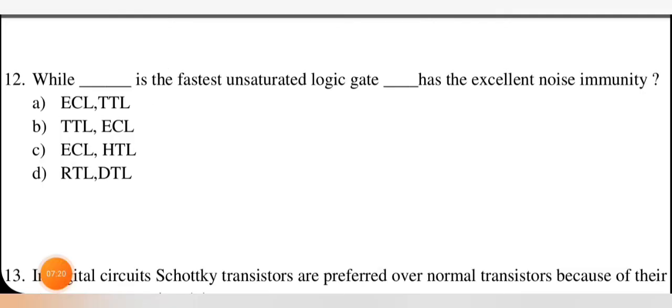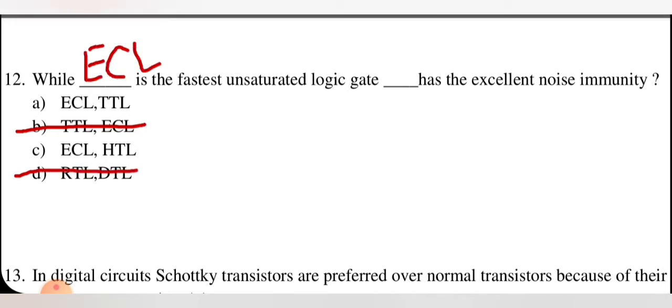Dash is the fastest unsaturated logic gate; dash has excellent noise immunity. For fastest unsaturated — unsaturated means it does not go into saturation. TTL goes into saturation so it is wrong; RTL also goes into saturation so it is wrong. ECL is the fastest unsaturated logic gate, and HTL has excellent noise immunity. So option C is correct.